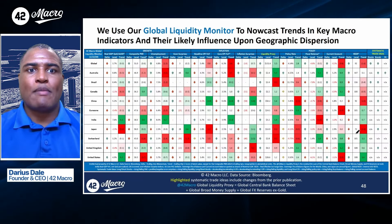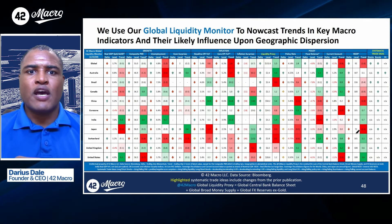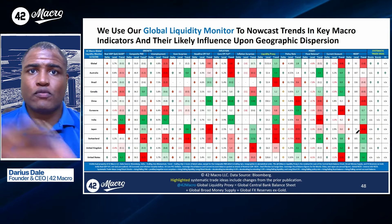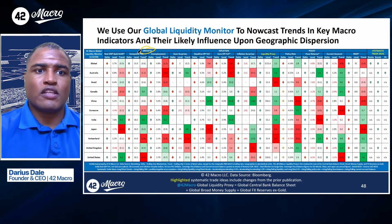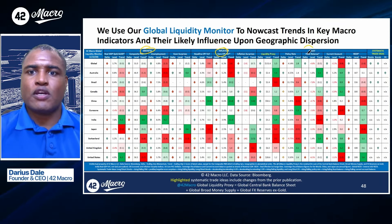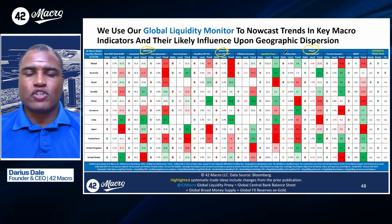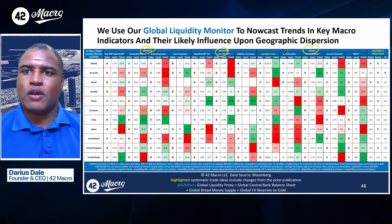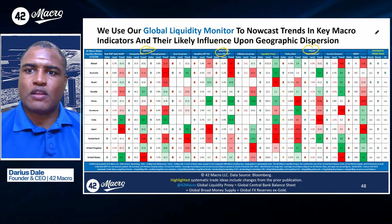So lastly, wrapping up, we use our global liquidity monitor to nowcast trends and key macro indicators on their likely influence upon geographic dispersion — for those of you running global money. Look at it through the lens of growth, inflation and policy. Obviously there's a lot of information on this chart, but you wouldn't need to make time to read this whole thing every week or every day when you see it in the lead-up morning note.